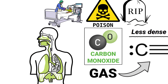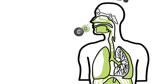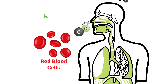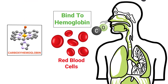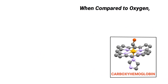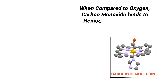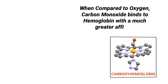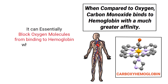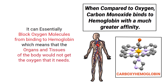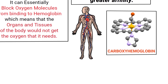Carbon monoxide is a poisonous gas that can cause sudden illness or death if too much enters the body by inhalation. Once inhaled, it enters red blood cells where it binds to hemoglobin — a combination known as carboxyhemoglobin. Compared to oxygen, carbon monoxide binds to hemoglobin with a much greater affinity, which can essentially block oxygen molecules from binding, meaning organs and tissues would not get the oxygen they need.